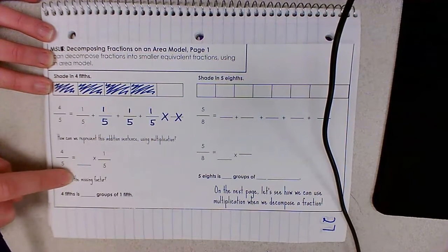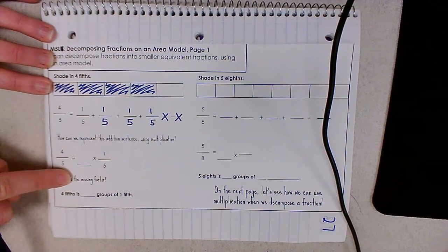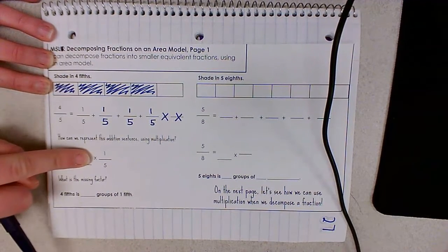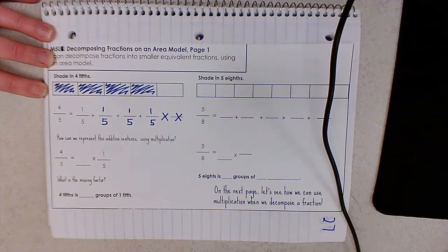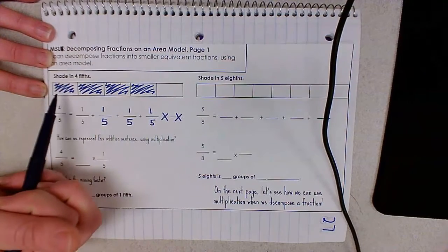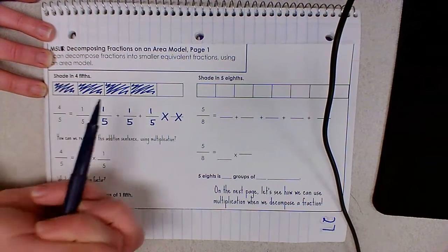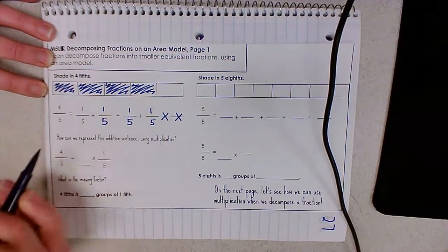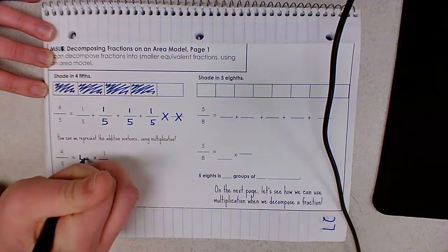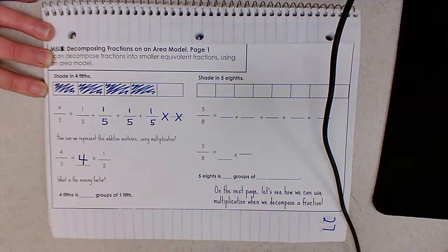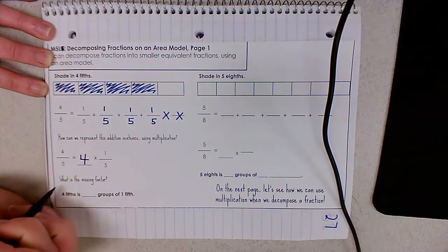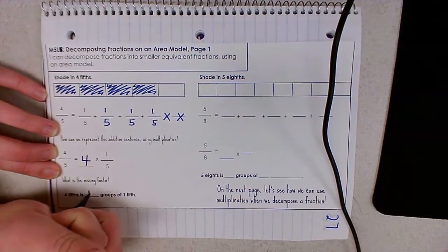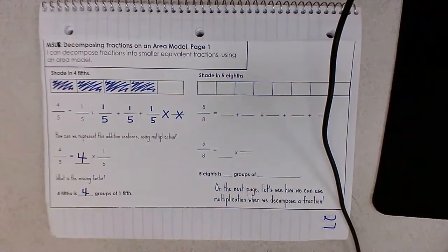Remember that multiplication symbols are just a fancy way of saying the words 'groups of.' Four-fifths is blank groups of one-fifth. How many groups of one-fifth are equivalent to four-fifths? One, two, three, four — I have four groups of one-fifth. So what's the missing factor? Four-fifths is four groups of one-fifth.